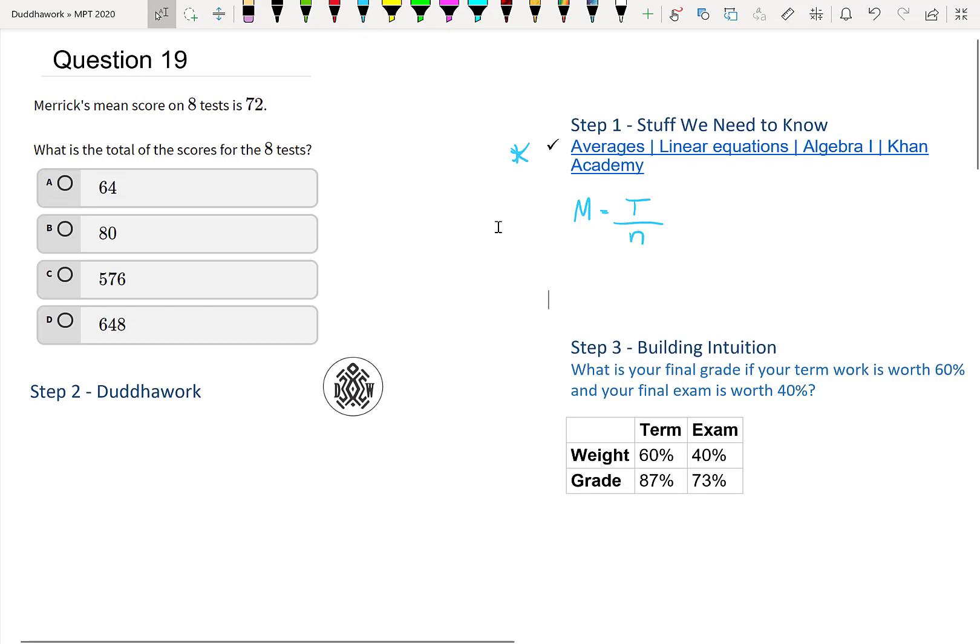So there's different ways to write this formula. You can pretend that Merrick had 72 on his first test and then 72. Keep in mind, we want an average of 72. So just as a stupid example, let's pretend that he got 72 on all of them. So right now I'm at five, six, seven, eight. So we got 72 on all of them. And then we need to divide this number by the number of times he wrote the test. So it would be divided by eight, right?